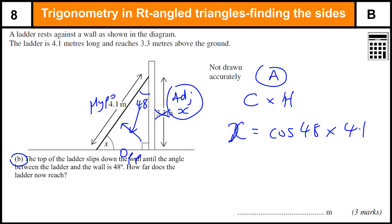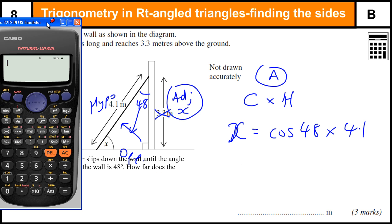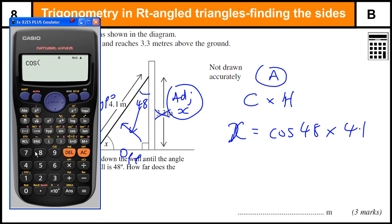Get the calculator over. We've got cos 48, don't forget to close the bracket, times by 4.1. That gives us 2.74 metres to three significant figures.